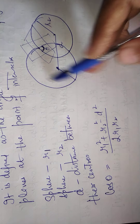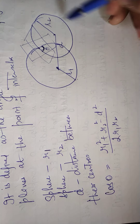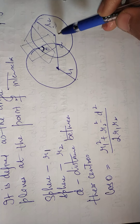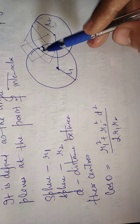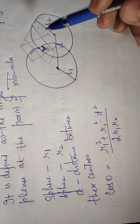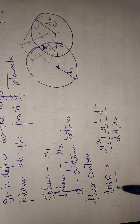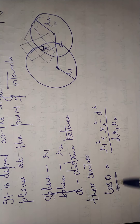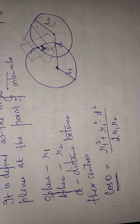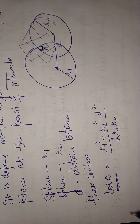So if this is the sphere whose radius is r1, and this is the sphere whose radius is r2, and d is the distance between their centers, then the angle theta between the spheres — which is the angle between the tangent planes at the point of intersection — is given by cos θ = (r1² + r2² − d²) / (2 r1 r2).